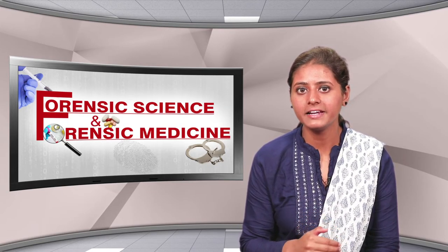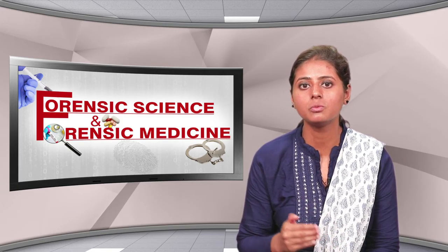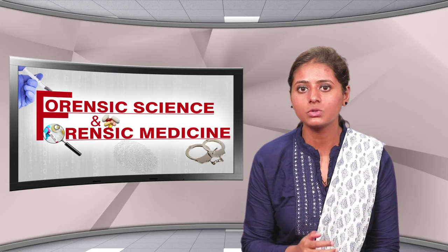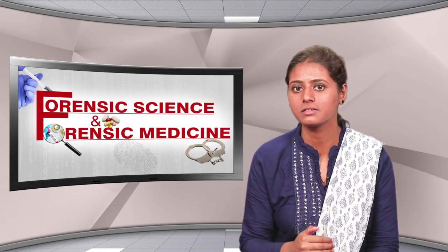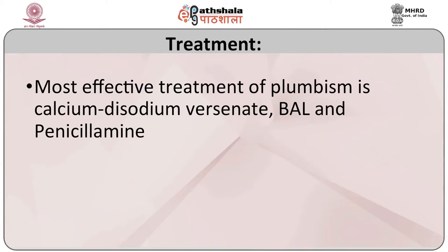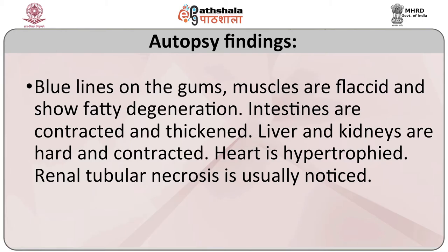For diagnosis, the concentration of lead in blood is usually between 0.1 to 0.6 mg per 100 ml. X-ray evidence of increased radio-opaque bands at the metaphysis of long bones is seen in children. The most effective treatment for plumbism is calcium disodium versenate (EDTA), BAL, and penicillamine. Autopsy findings include blue lines on the gums, flaccid muscles with fatty degeneration, contracted and thickened intestines, hard and contracted liver and kidneys, hypertrophied heart, and renal tubular necrosis.